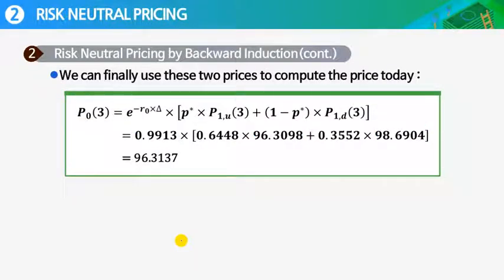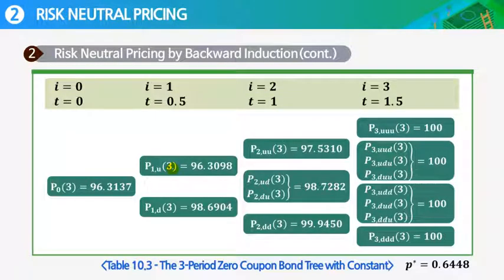Now we can finally use these two prices to compute the price today. So P_{0}(3) uses the discount rate around 1.74%, and then risk-neutral probability and 1 minus this one. So we have this price.